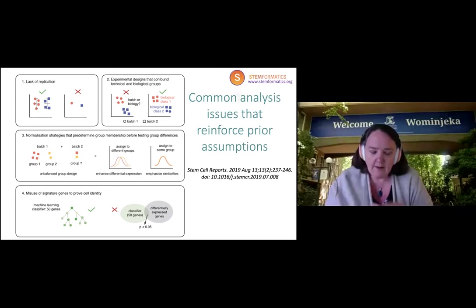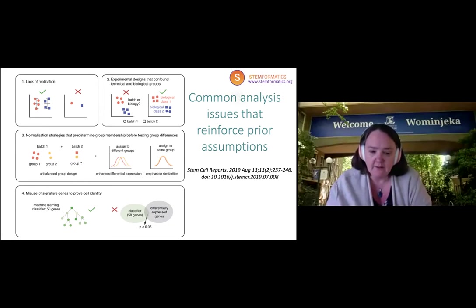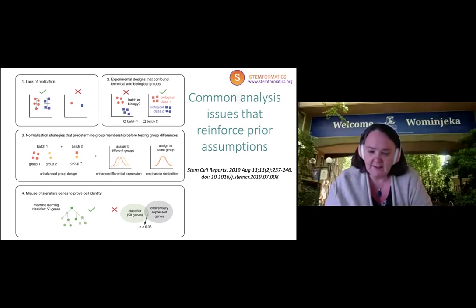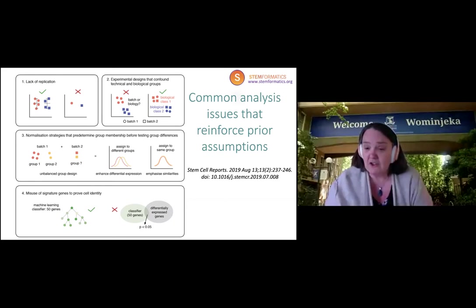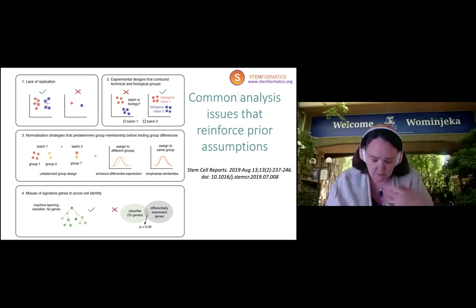The other area we've found in stem cell research is the use of small numbers of marker genes as evidence that cells are a stem cell or a differentiated cell type. And the question — how similar is a stem cell to the cells of our body — is what I want to explore with you today.